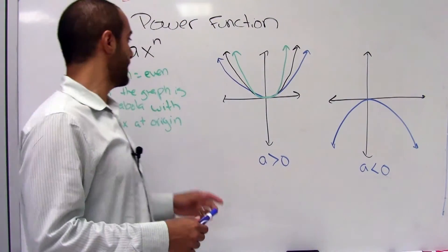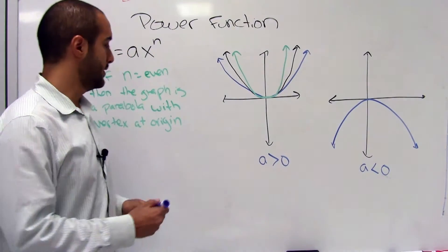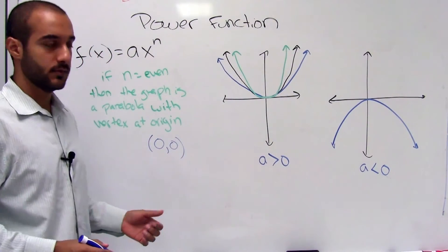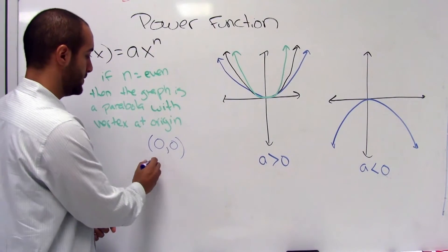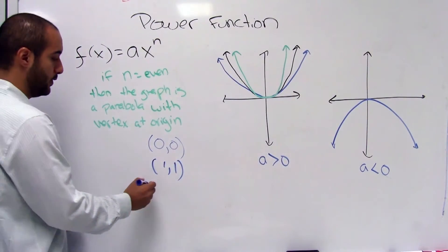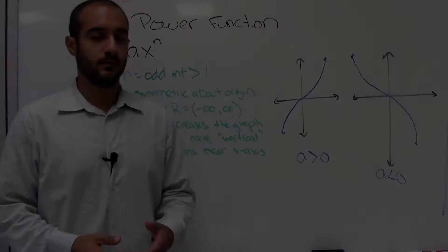Another important feature to point out when you have n equal to an even number is that they'll always have three points. They will always have 0, 0, so we'll have the origin. We always have 1, 1, and we always have negative 1, 1.